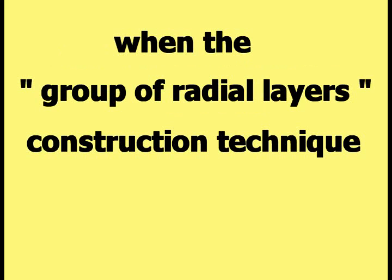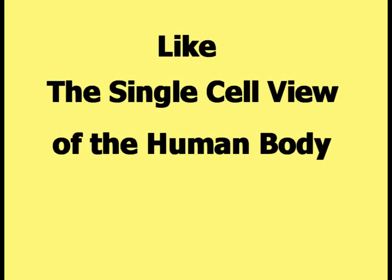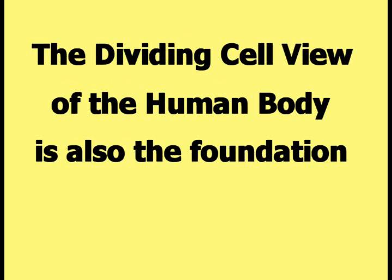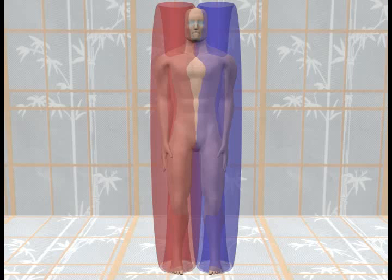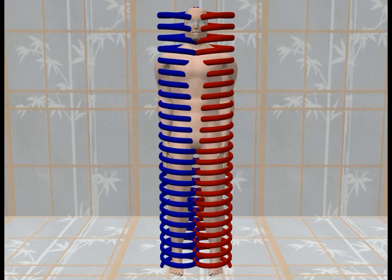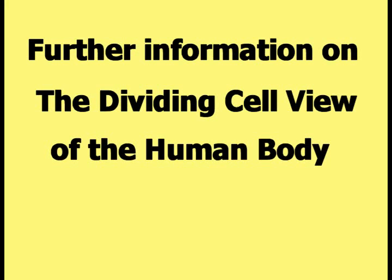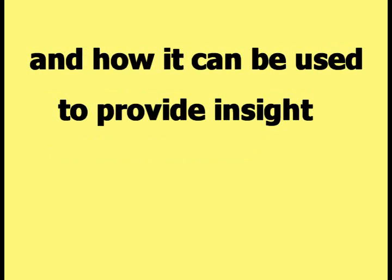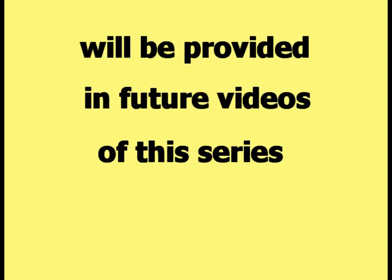An intriguing image is produced when the radial layer construction technique is applied to the two cells of the dividing cell view of the human body, as shown in this picture. Like the single cell view, the dividing cell view is also the foundation for other theoretical models, including the double torus view, the double cylinder view, and the coil spring view of the human body. Further information on the dividing cell view, and how it can be used to provide insight into how the human body is constructed and behaves, will be provided in future videos of this series.